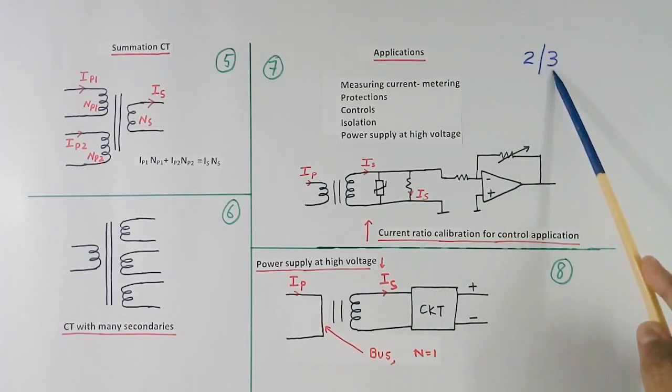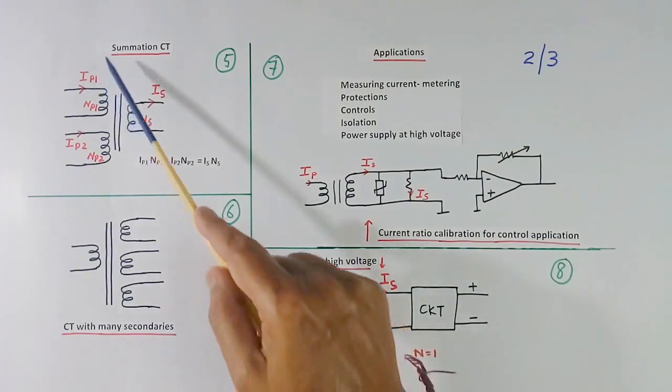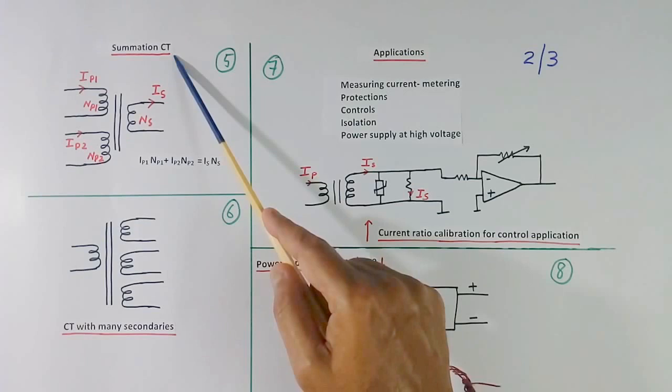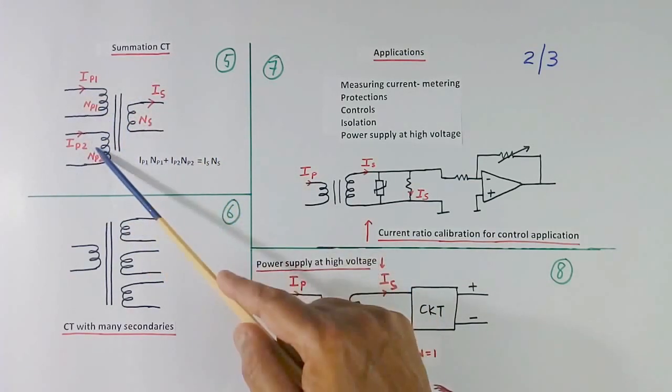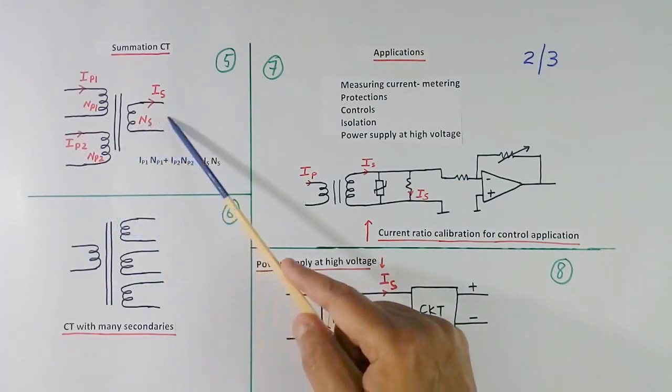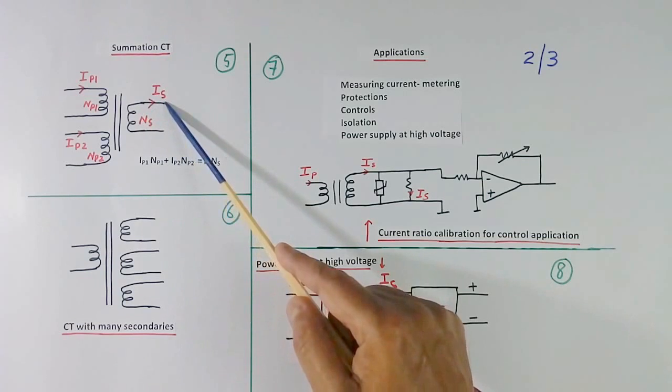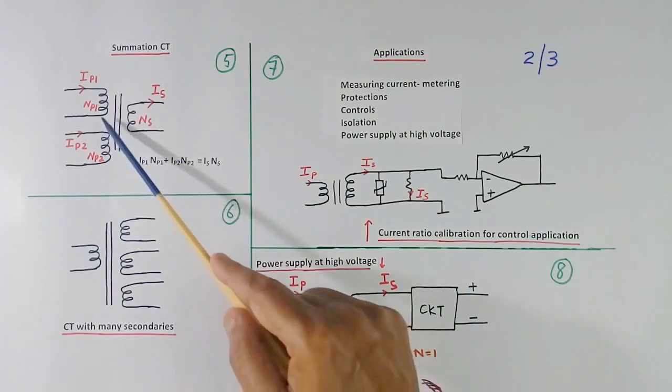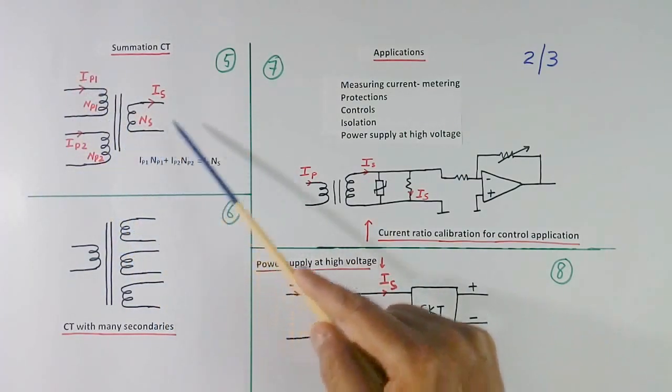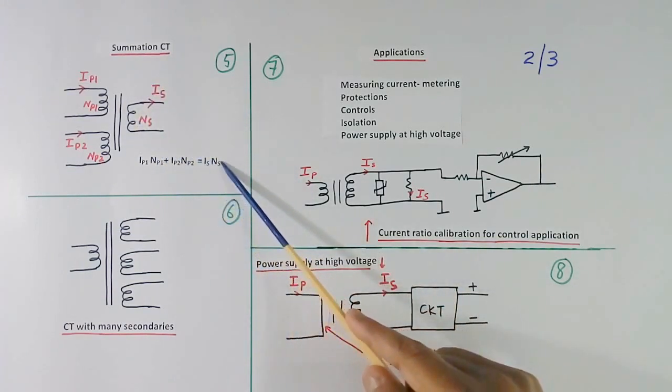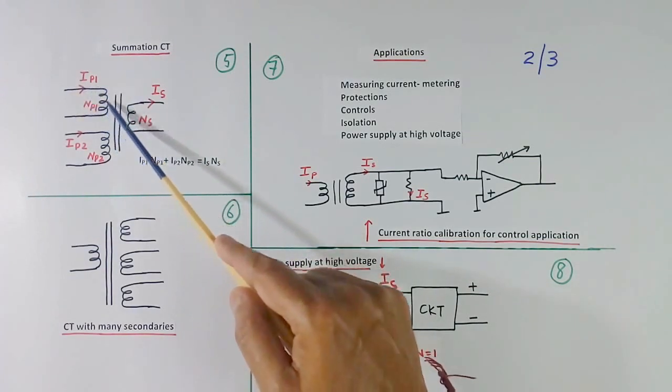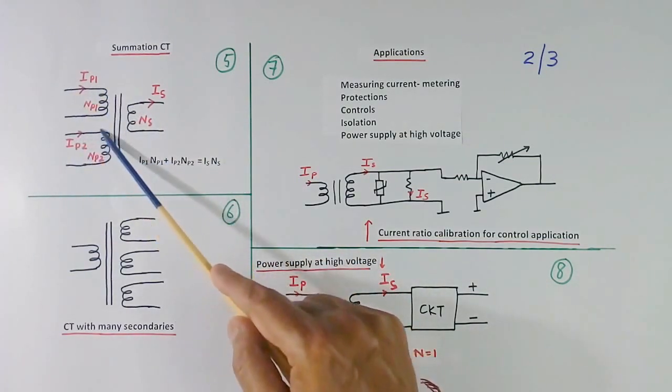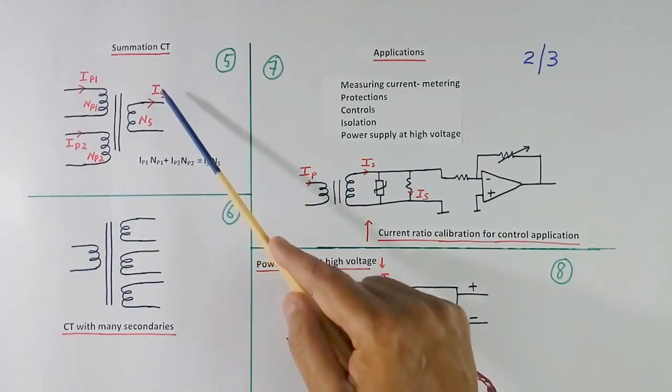This is second sheet of theory. So far we were talking about normal typical CT. But there are summation CT available. This CT will have many primary. Here I have shown 2. There may be more than 2. And secondary will be 1. And secondary current will show the summation of all currents. And ampere turn of total primary will be equal to ampere turn of secondary. Like here, IP1 into NP1 plus IP2 into NP2 is equal to IS NS.